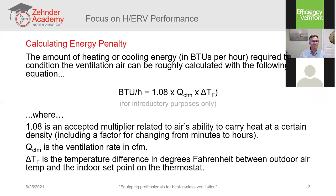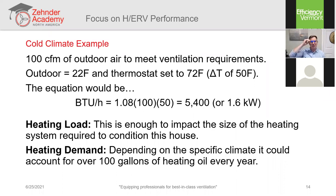Cold climate example: we want to ventilate with 100 CFM, outdoor temperature is 22°F, thermostat is set to 72°F — a ΔT of 50 degrees Fahrenheit. The equation gives us 1.08 × 100 × 50 = 5,400 BTUs per hour, or 1.6 kilowatts. In terms of heating load, this is enough to impact the size of the heating system required — 1.6 kilowatts could mean a different size heat pump.